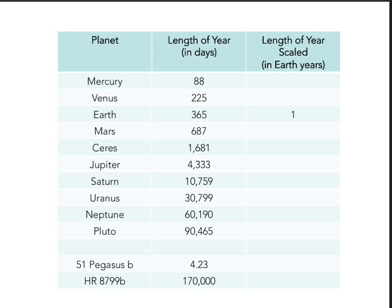The planets in our solar system may or may not be typical of the universe. We find lots of planets around other stars, and they may or may not be similar to our own. Some, like 51 Pegasus b with its really short year, are hard to explain. Others, like HR 8799b with a really long year, are also hard to explain. Hopefully we'll get a chance to talk more about that later in the semester.